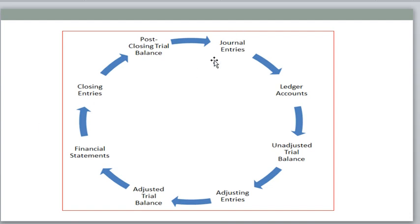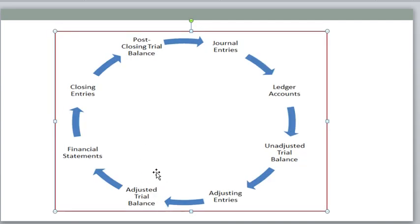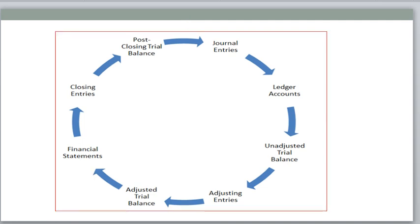The accounting cycle starts with journal entries. After that, ledger accounts. Any unadjusted balances are there, that we can make a trial balance. After that, we need to make adjustments. After that, we need to prepare the adjusted trial balance. Then we need to prepare the financial statement — nothing but profit and loss account, balance sheet, and cash flow statements. Then we need to prepare the closing entries. Finally, we need to post a closing trial balance. This is the accounting cycle.